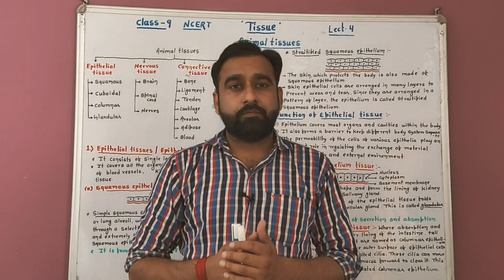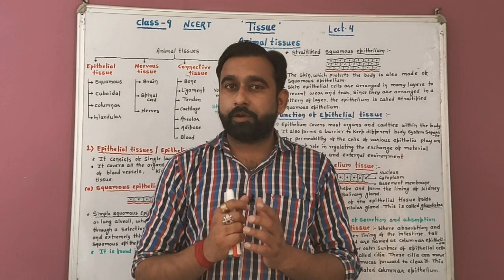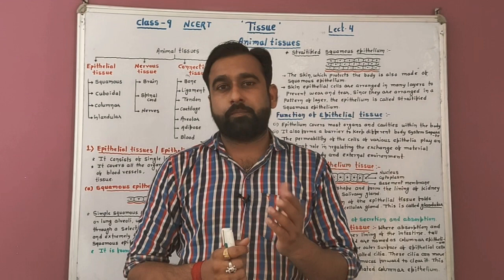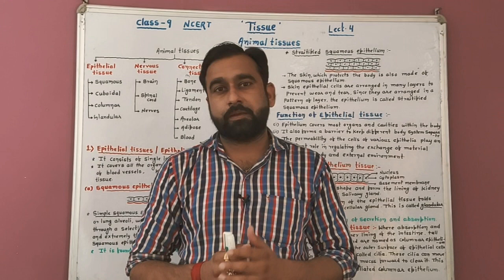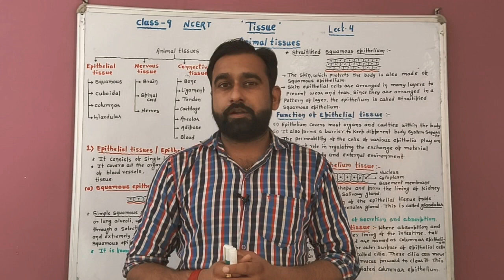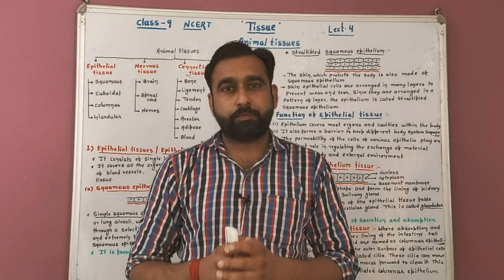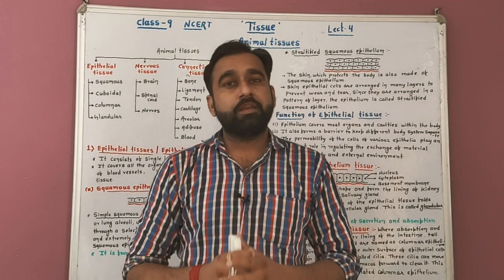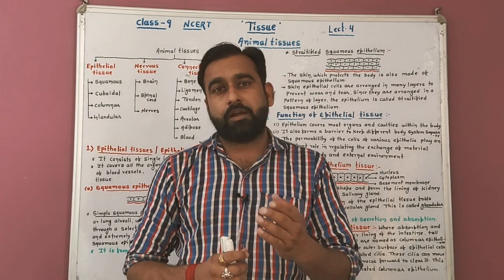We will discuss all the types of animal tissues present in an animal body briefly. In the last video, we studied plant tissues — Meristematic Tissues, with its classification into apical meristem, intercalary meristem, and lateral meristem. Then we studied Permanent Tissue: Simple Permanent Tissue (parenchyma, colenchyma, sclerenchyma) and Complex Permanent Tissue (xylem and phloem).